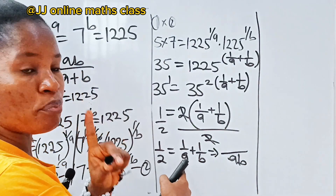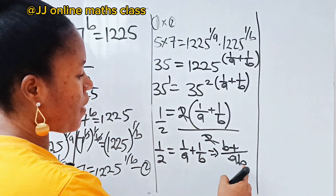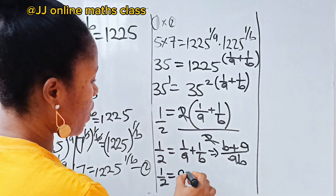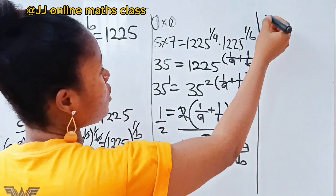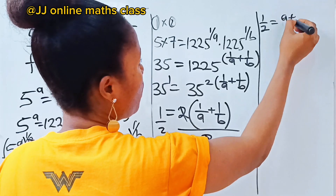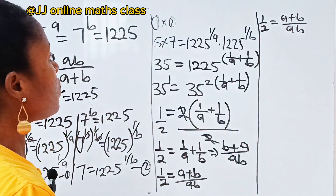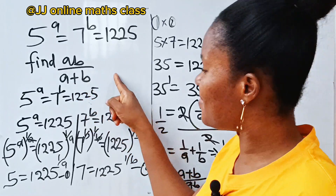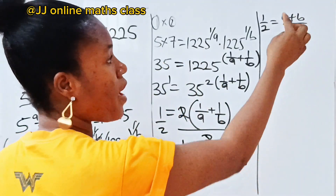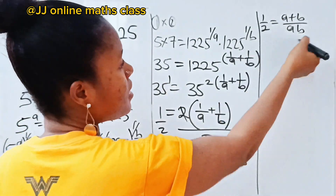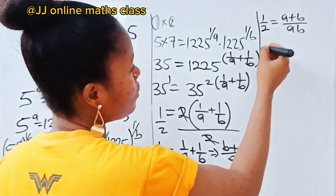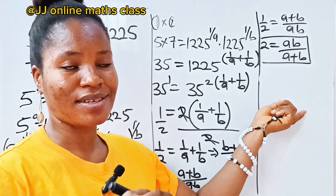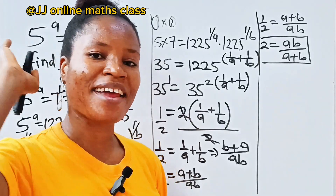Now let's solve: one over two equals one over a plus one over b. The LCM of a and b is ab. So one over two equals b over ab plus a over ab, which gives one over two equals a plus b over ab. Notice from the question we are asked to find ab over a plus b, which is the inverse of what we have. Taking the inverse of both sides: inverse of one half is two, and inverse of a plus b over ab is ab over a plus b. So the final answer is 2.